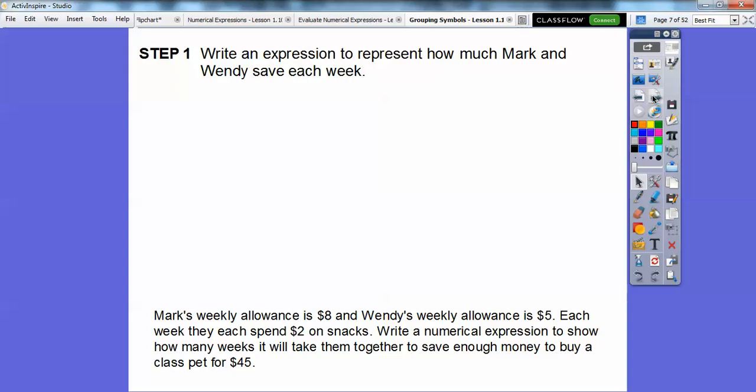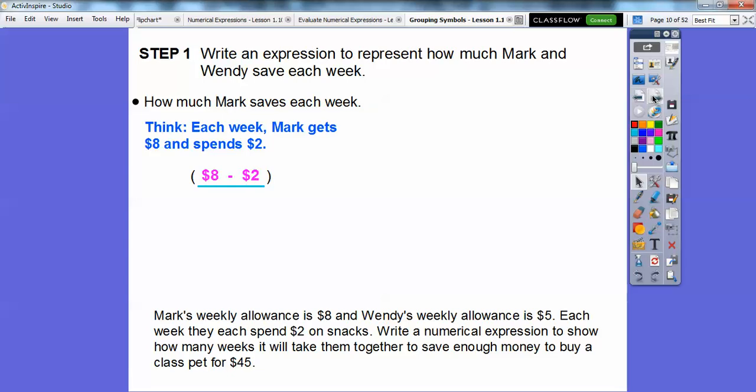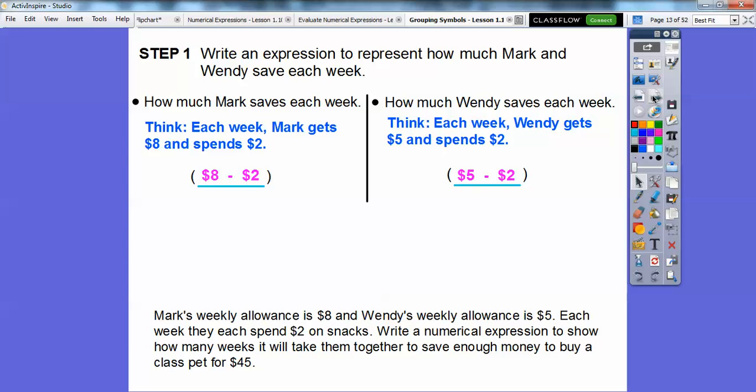So let's go ahead and write an expression to represent how much Mark and Wendy save each week. So how much Mark saves each week? I think he gets $8 and then he spends $2. So the expression is $8 minus 2. And similarly, Wendy gets $5 and she spends $2. So it's $5 minus 2. And I know you guys are thinking that's $6 and that's $3 right there. But we're going to leave them in these expressions just so we see how these order of operations work. So how much money do Mark and Wendy save together? Well, we'll just put this expression together plus this expression together.